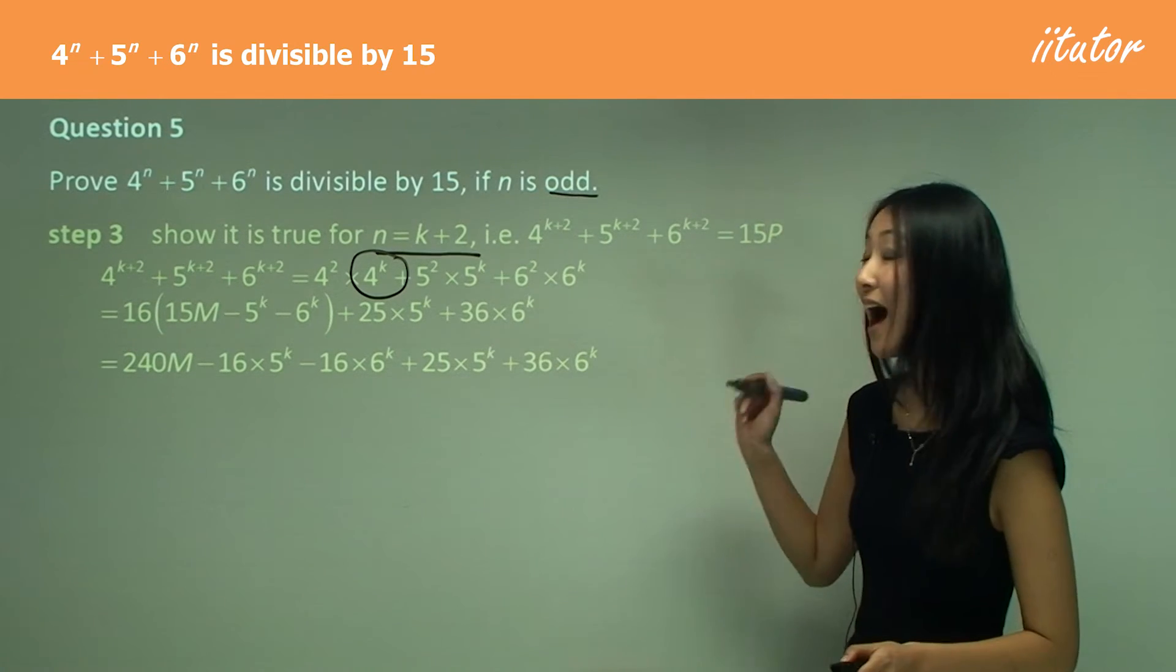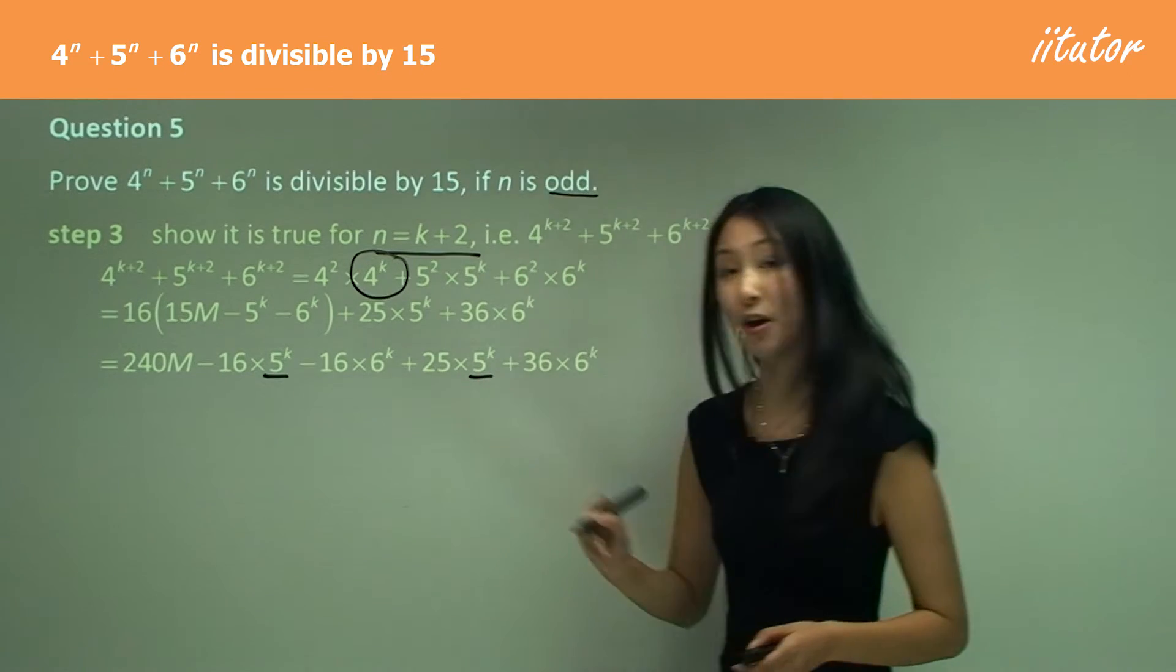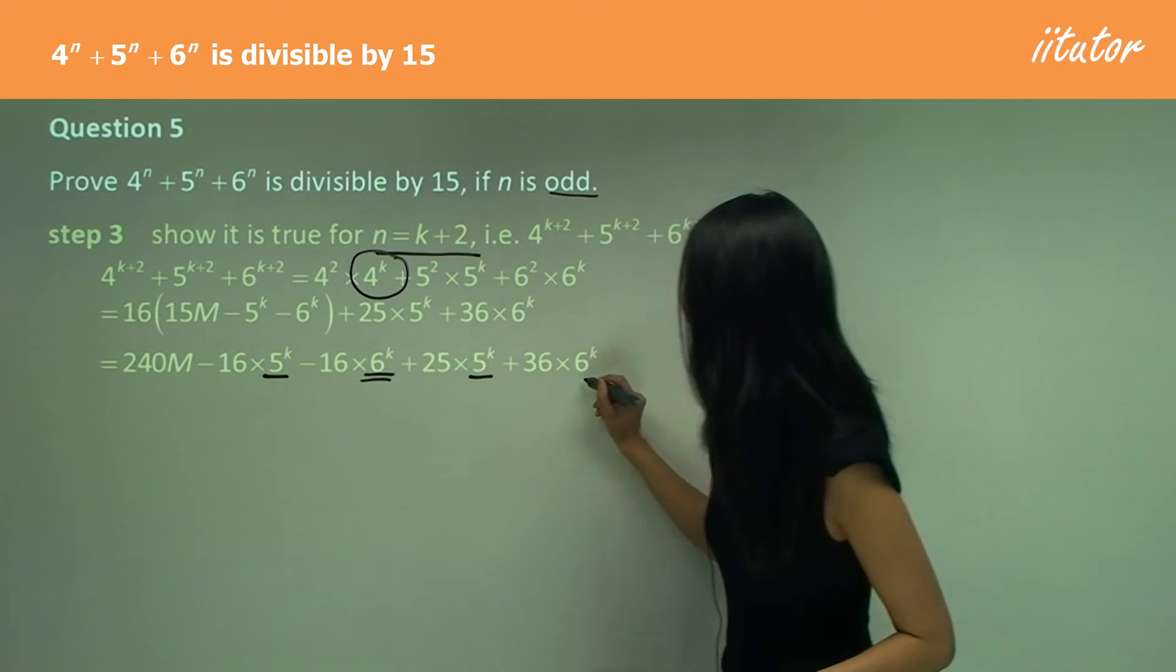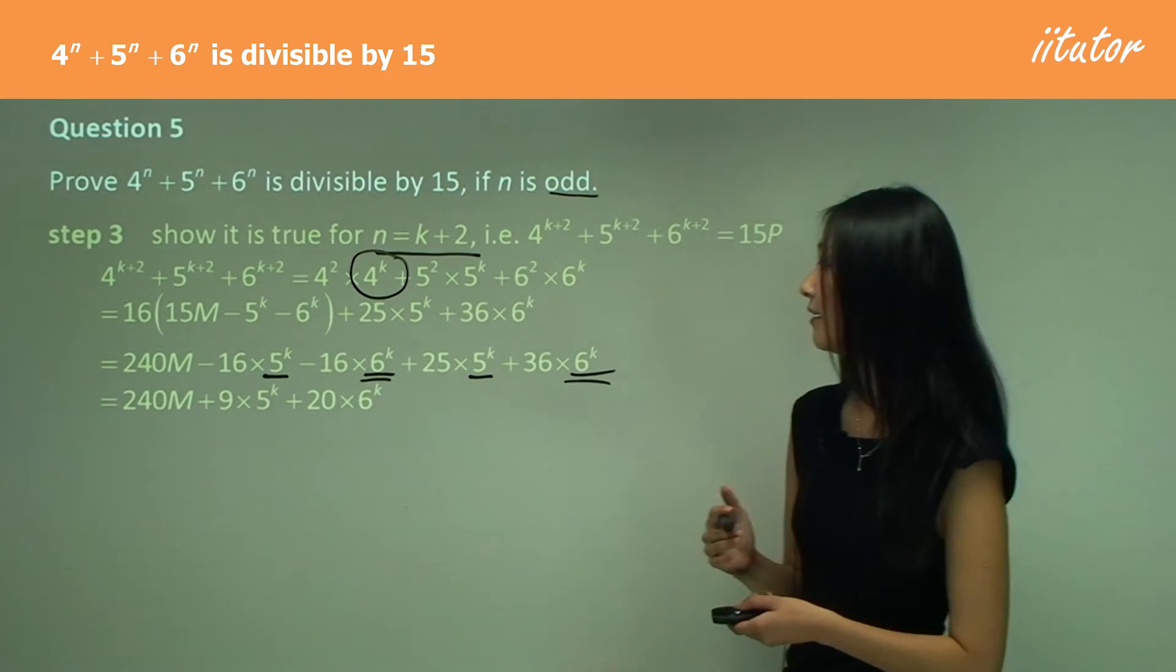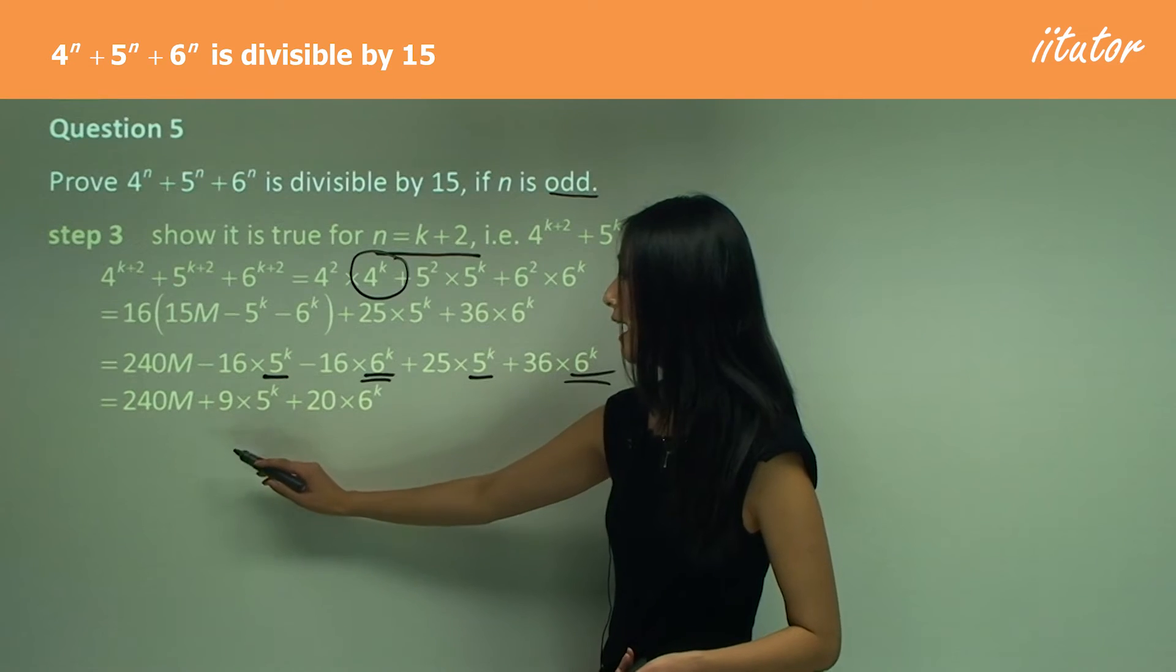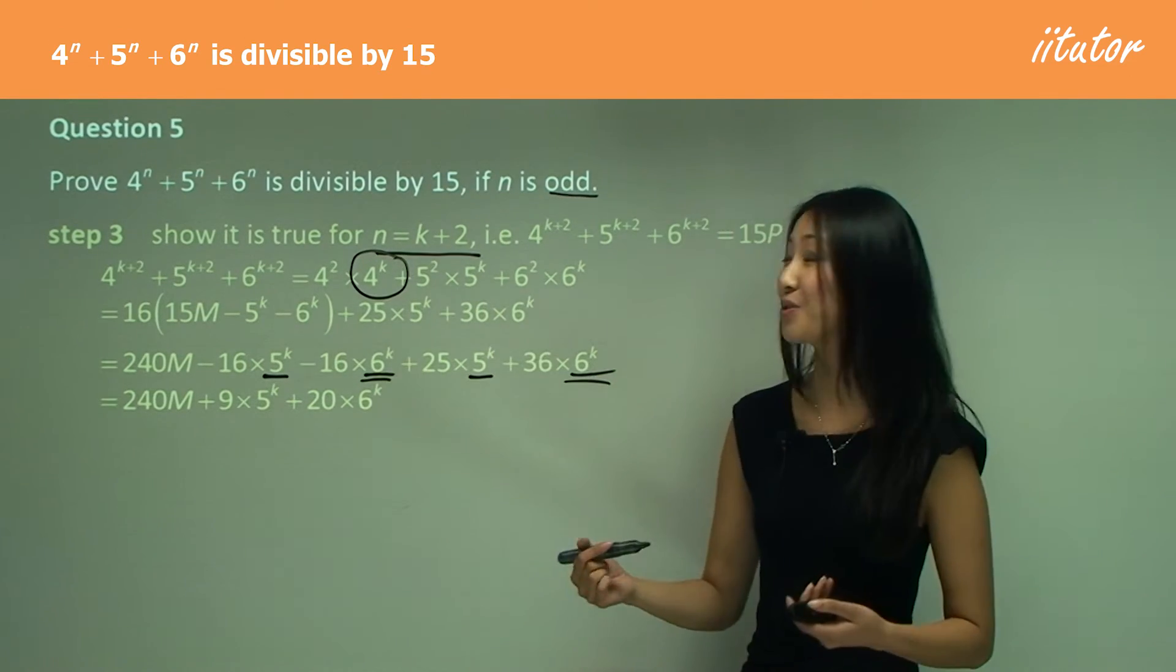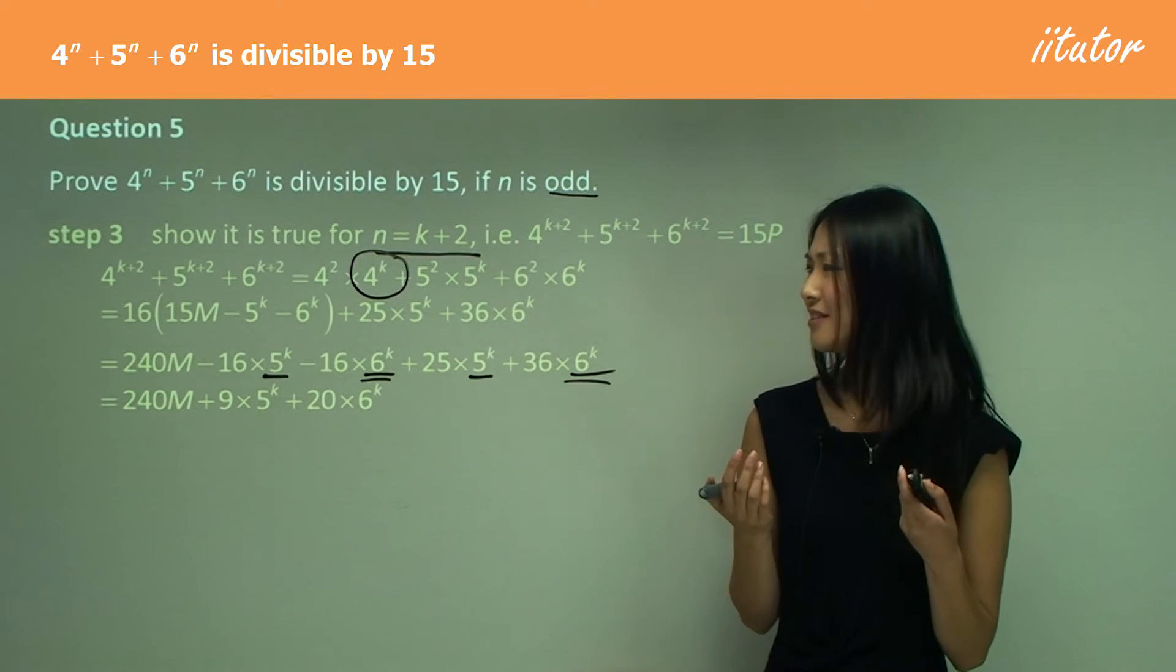I put together the common factors. This and this is common, so I can add that together. And this and this is also common. Just added them together. 25 subtract 16 gives me 9. 36 subtract 16 gives me 20. I have 240, which I can take out 15 for. 9 and 20, I can't take out 15 for either of those. So what am I going to do here? How can I change this in any way possible?